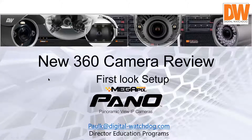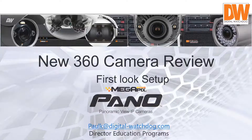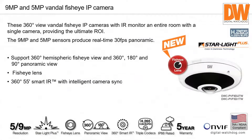Today we're going to talk about our 360 Pano cameras. These products we just released have a little bit of new functionality — improvements over the previous ones. We released two models: a 9-megapixel and a 5-megapixel camera, both doing 30 frames a second.